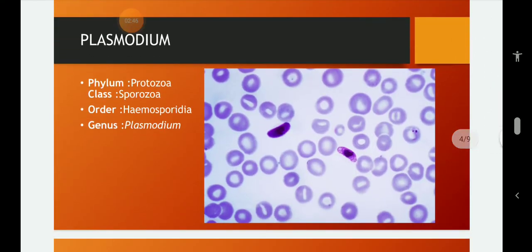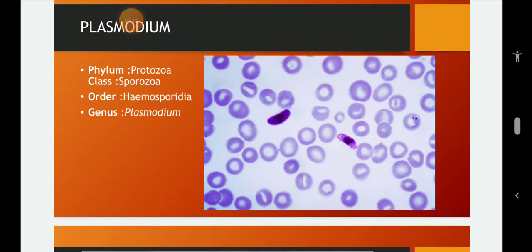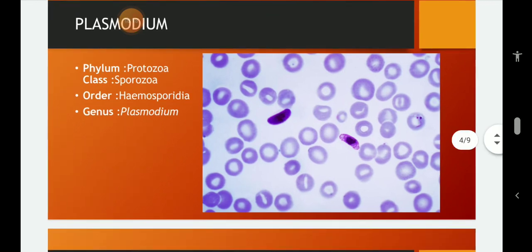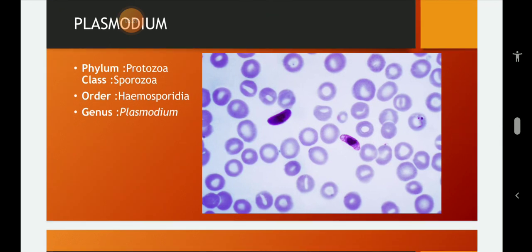The second one is Plasmodium and Plasmodium belongs again to Protozoa class Sporozoa and also belongs to order Haemosporidia. The order need not be known, phylum and class should be fine for a parasite. Plasmodium, it is an intracellular parasite found in liver cells and RBCs of man. As you can see, these are the RBCs and in the pool of RBCs, there are two Plasmodium falciparum and commonly called as a malarial parasite.